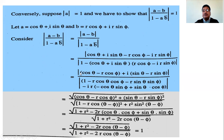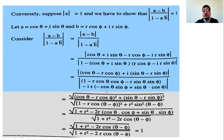The modulus of a number x + iy is √(x² + y²). Computing the modulus of the numerator: √((cosθ - r·cosφ)² + (sinθ - r·sinφ)²). Expanding: cos²θ - 2r·cosθ·cosφ + r²cos²φ + sin²θ - 2r·sinθ·sinφ + r²sin²φ.